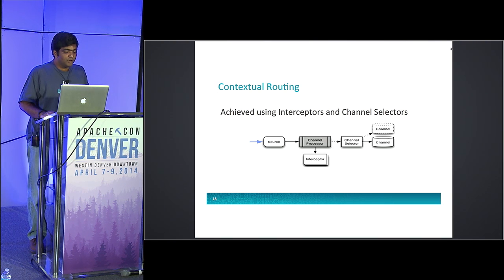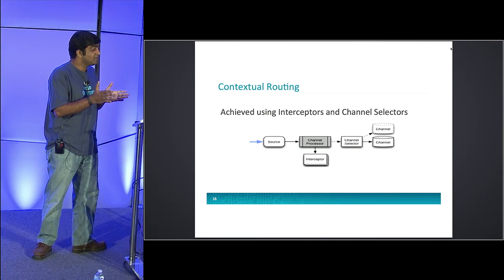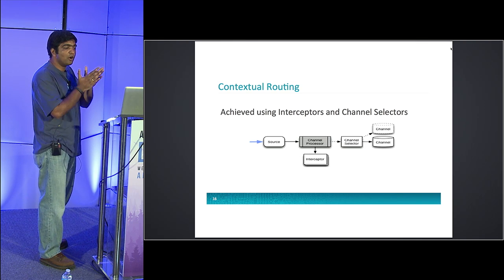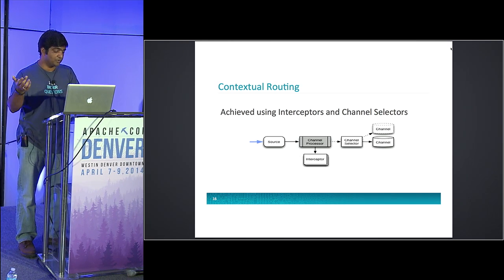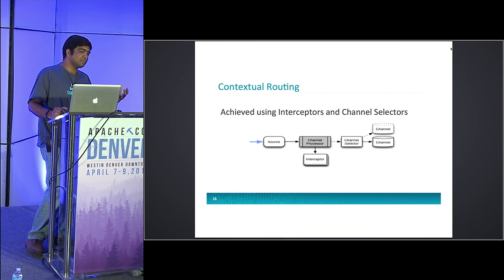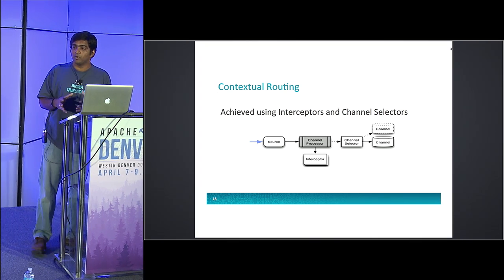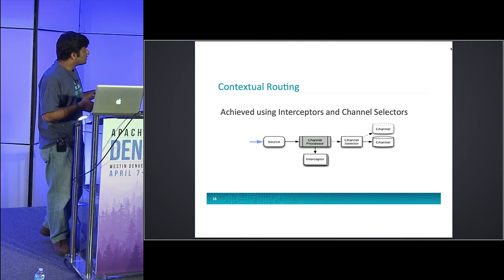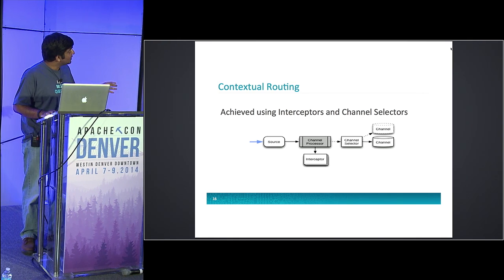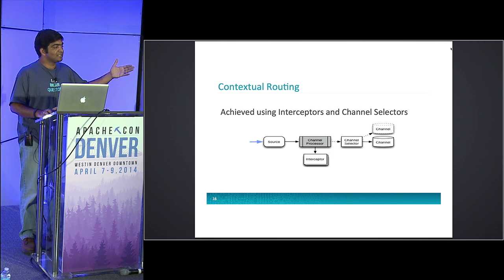Contextual routing is done using a channel selector. The default channel selector is the replicating channel selector — if you mention multiple channels for a single source, the source simply replicates all data into all of those channels, allowing you to write every piece of data to different destinations. Sometimes you would want to look at the events, make some changes, or drop some events. For that, Flume supports what's called an interceptor chain. Interceptors are simple components you can implement yourself or use bundled ones. You can use them to prioritize events, modify events, or drop events. Whatever modification the interceptor does is seen by the selector which decides where to write the events.